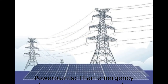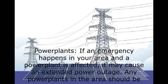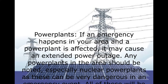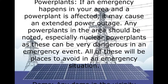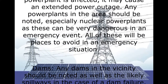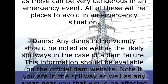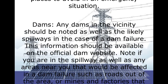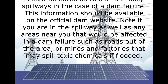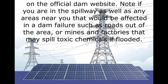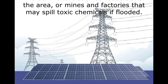If an emergency happens in your area and a power plant is affected, it may cause an extended power outage. Any power plants in the area should be noted, especially nuclear power plants, as these can be very dangerous in an emergency event. Any dams in the vicinity should be noted as well as the likely spillways in case of a dam failure. This information should be available on the official dam website. Note if you are in the spillway as well as any areas near you that would be affected in a dam failure, such as roads out of the area or mines and factories that may spill toxic chemicals if flooded.